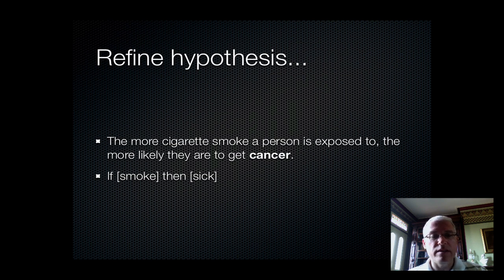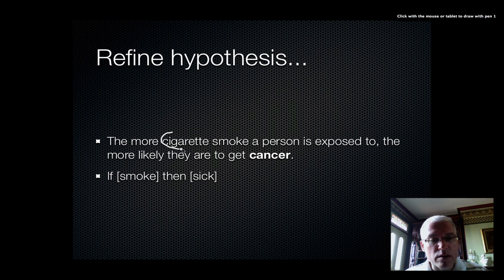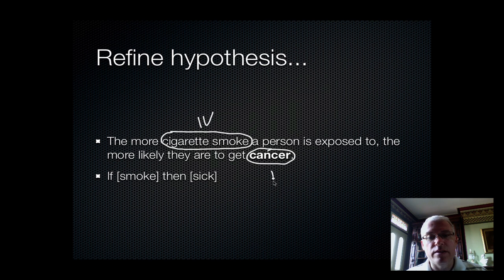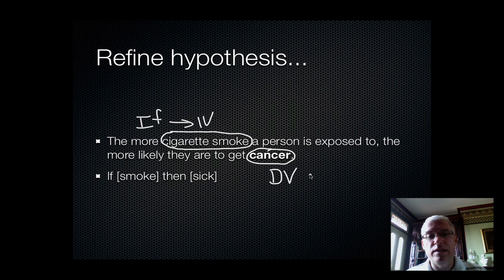Let's refine our hypothesis: the more cigarette smoke a person is exposed to, the more likely they are to get cancer. Cigarette smoke is our IV, and getting cancer is our DV. If you write a good hypothesis, the IV is always the implied 'if' and the DV is always the implied 'then.' So: if you smoke cigarettes, then you're more likely to get cancer.